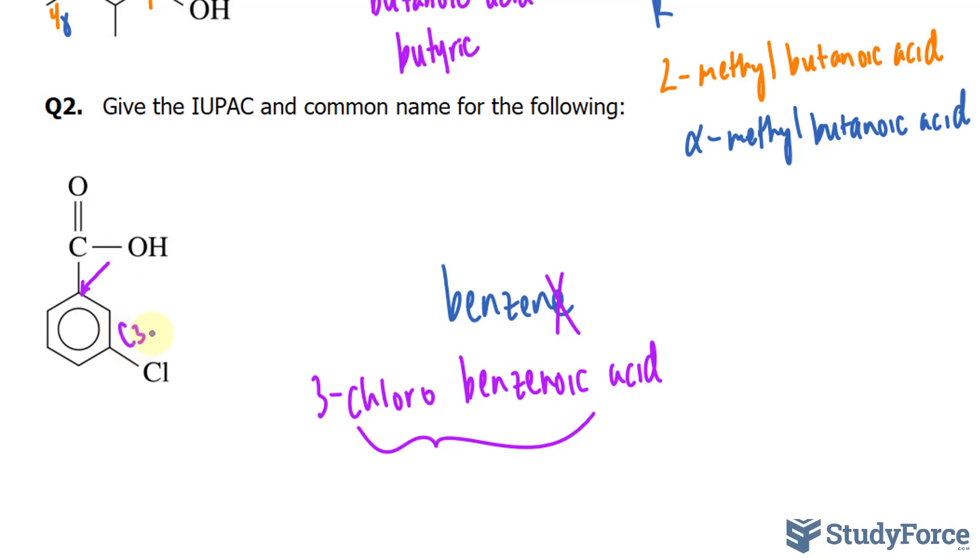so at C3, we call it meta or M. M-chloro, and the rest stays the same: benzoic acid.